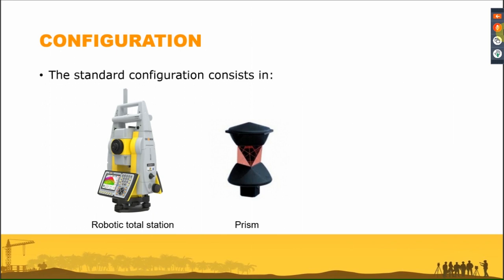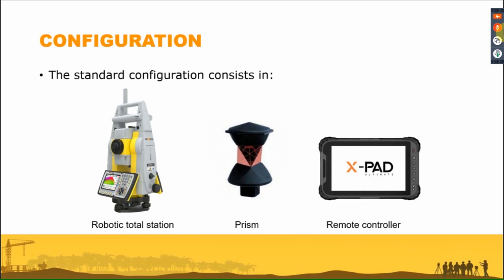We use a passive prism, so any prism can be used. In general, if we work with one operator, we want to use a 360 prism, but we can also use the standard circular prism. For the communication between the robotic total station and the controller, we use long-range Bluetooth — it is a very stable communication, not very power-consuming, and has no problems with radio frequency regulations. In general, with a standard Android controller, the range is about 250 to 300 meters, which is more than enough for standard jobs.